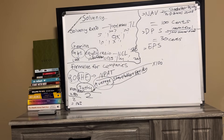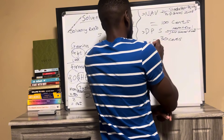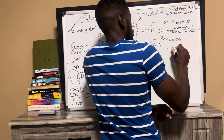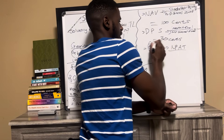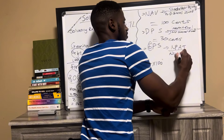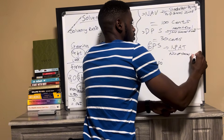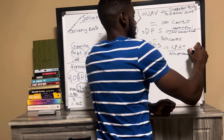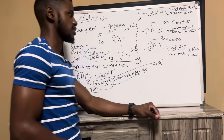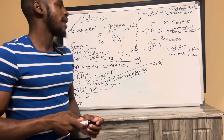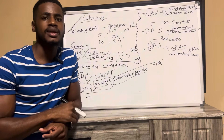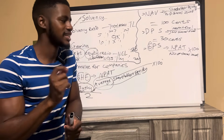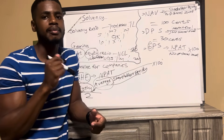Then we have EPS — Earnings Per Share. The word 'earnings' here represents net profit after tax. The formula is: net profit after tax divided by number of shares issued, times 100. The answer is in cents. This tells us how much each share earns the business — from the shares we issue, how much is each share earning us.